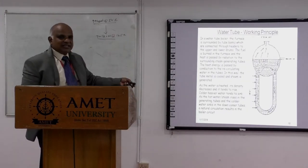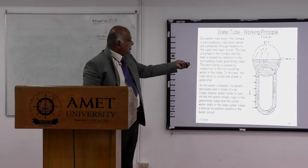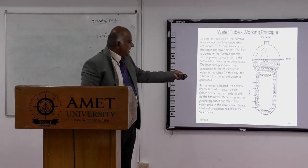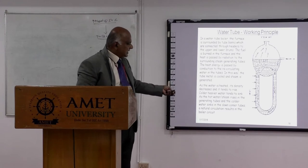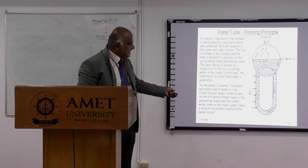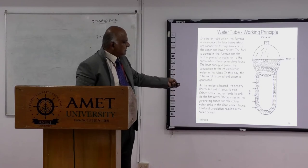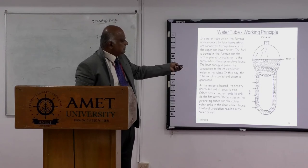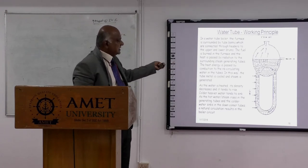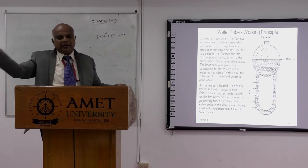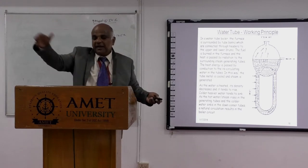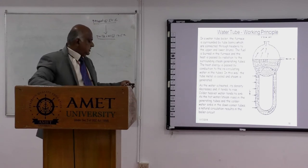In a simple boiler, feed water enters and goes via the downcomers. The furnace arrangement heats the water through the tubing, heat transfer takes place between the flue gas and the water, steam evaporates and is collected, then supplied to the service system of an IC engine or to the turbine for a steamship.